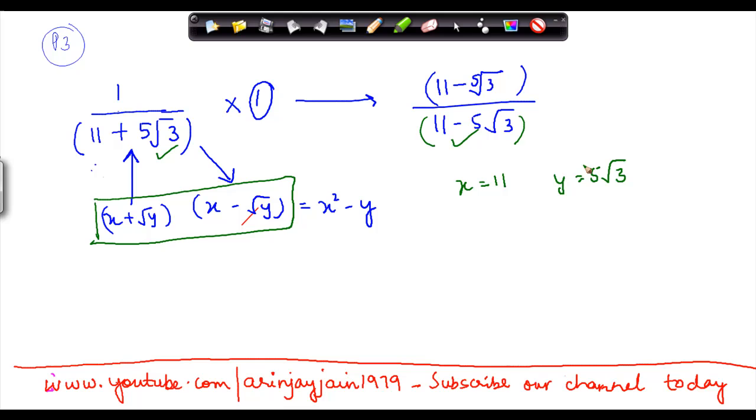My y becomes 5 under root 3 square is equal to 5 square into under root 3 square, or 25 into 3 is equal to 75. So this equation becomes x square which is 11 square minus 75, or 121 minus 75 which gives me 46.